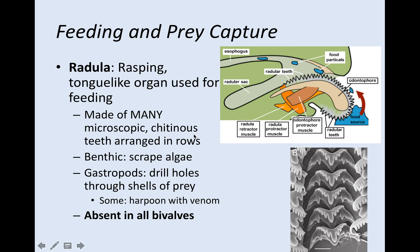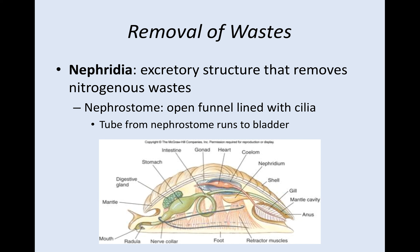How do molluscs feed and capture prey? Using something called a radula — a very rasping, tongue-like organ. It's made of microscopic chitinous teeth arranged in rows. If it's a benthic creature, it will scrape algae. Gastropods can literally drill holes through the shells of prey. Some have harpoons with venom. You do not see the radula in bivalves, which are clams. Clams filter feed.